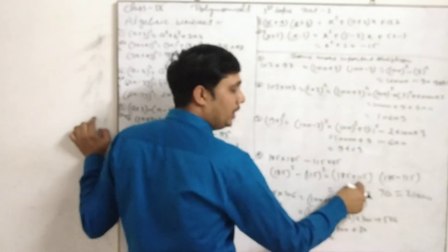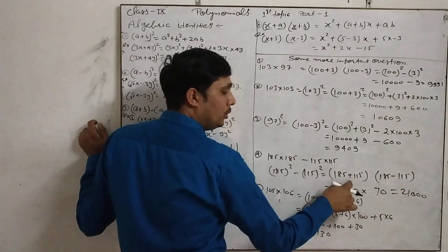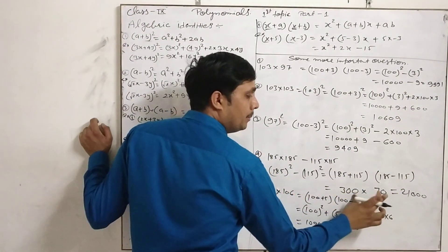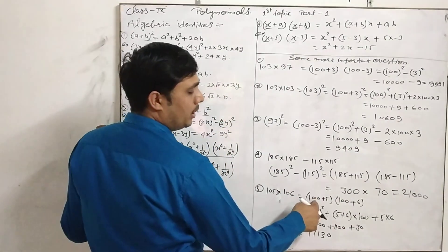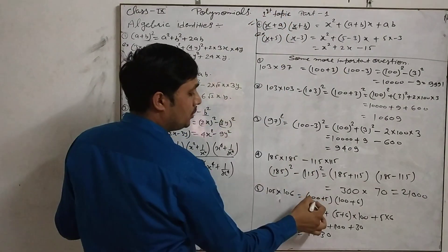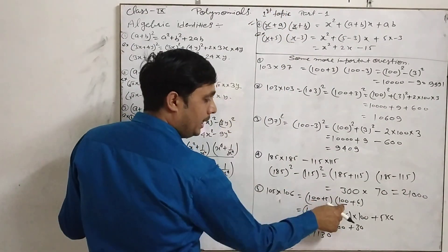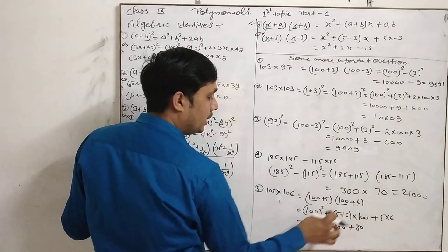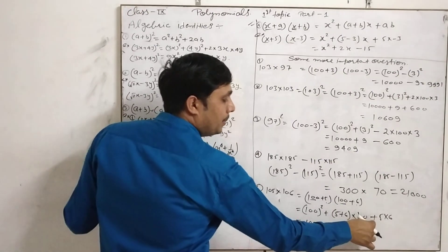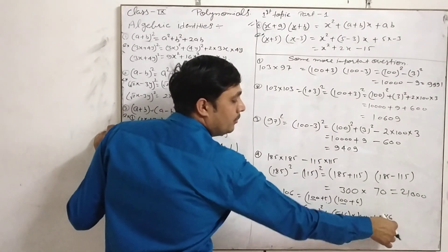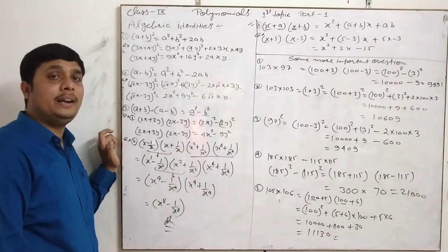We can use the (x + a)(x + b) formula when the first value is the same. For example, 105 × 106: here x is 100, a is 5, and b is 6. Using x² + (a + b)x + ab: 10,000 + (5 + 6)×100 + 5×6 = 10,000 + 1,100 + 30 = 11,130. These are the basic algebraic identities.